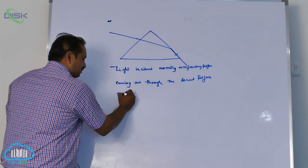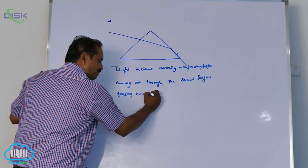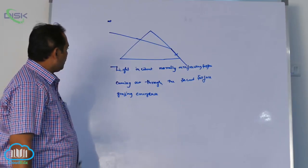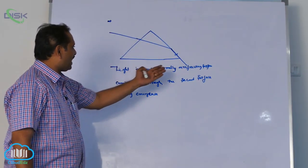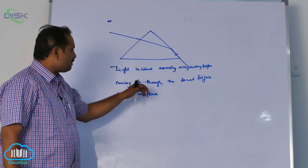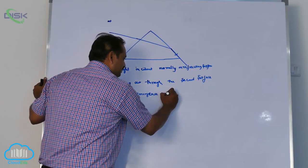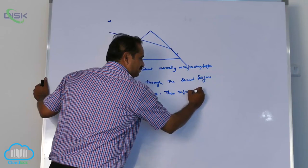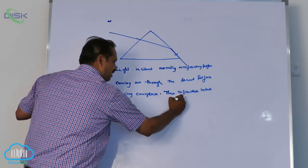grazing emergence, grazing emergence I will explain to you. So light is incident normally on refracting surface, coming out through the second surface, grazing emergence, then refractive index of the prism.